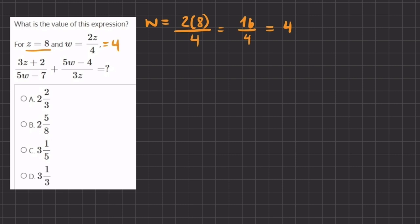Now let's plug in our values for z and w into our expression and solve. So now we have 3 times z which is 8, plus 2, divided by 5 times w which is 4, minus 7, plus our second fraction 5 times w which is 4, minus 4, divided by 3 times z which is 8.